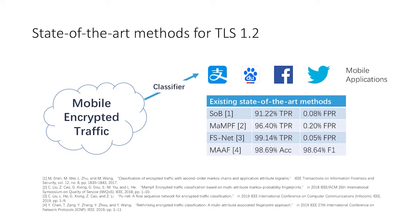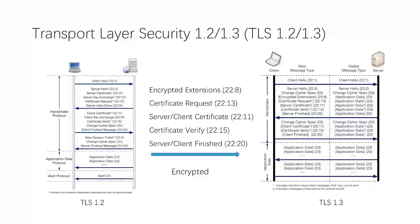This slide presents the classification effectiveness of state-of-the-art methods. All these methods reach more than 90% TPR or accuracy. However, with the continued development of TLS 1.3, existing works are facing the problem of poor applicability.